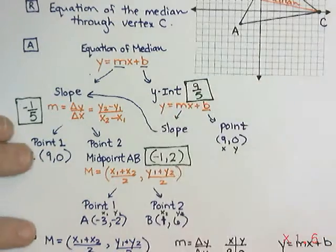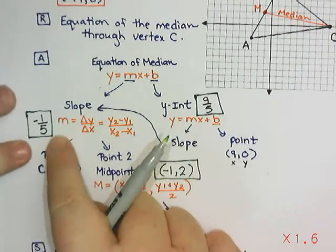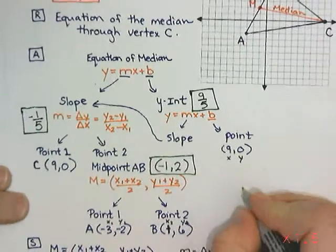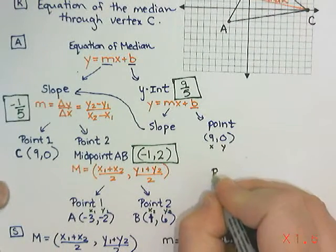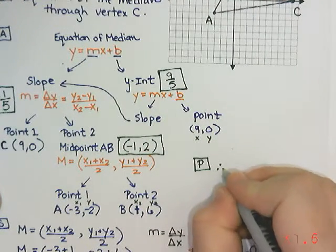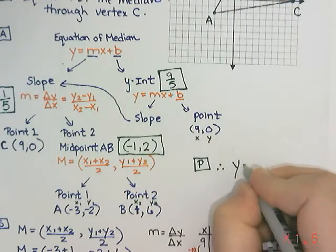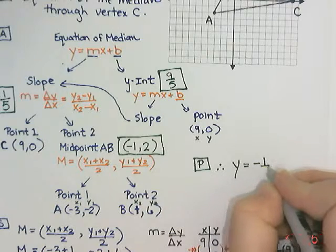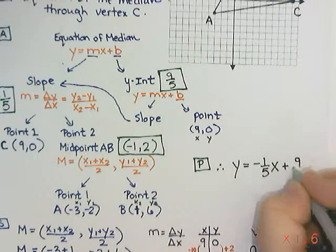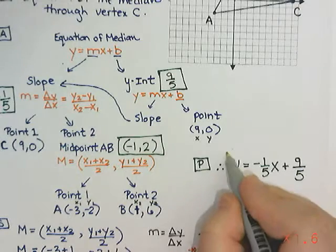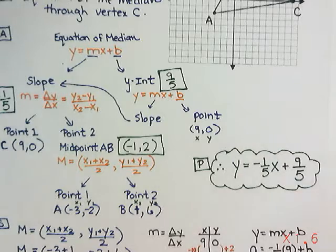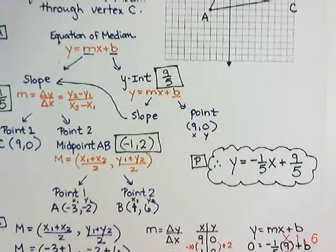So the last thing I need to do is write my equation using my slope and y-intercept. That's the P, the presentation of my answer. Therefore, the equation is y equals negative 1 fifth x plus 9 over 5. And that is the equation of the median.